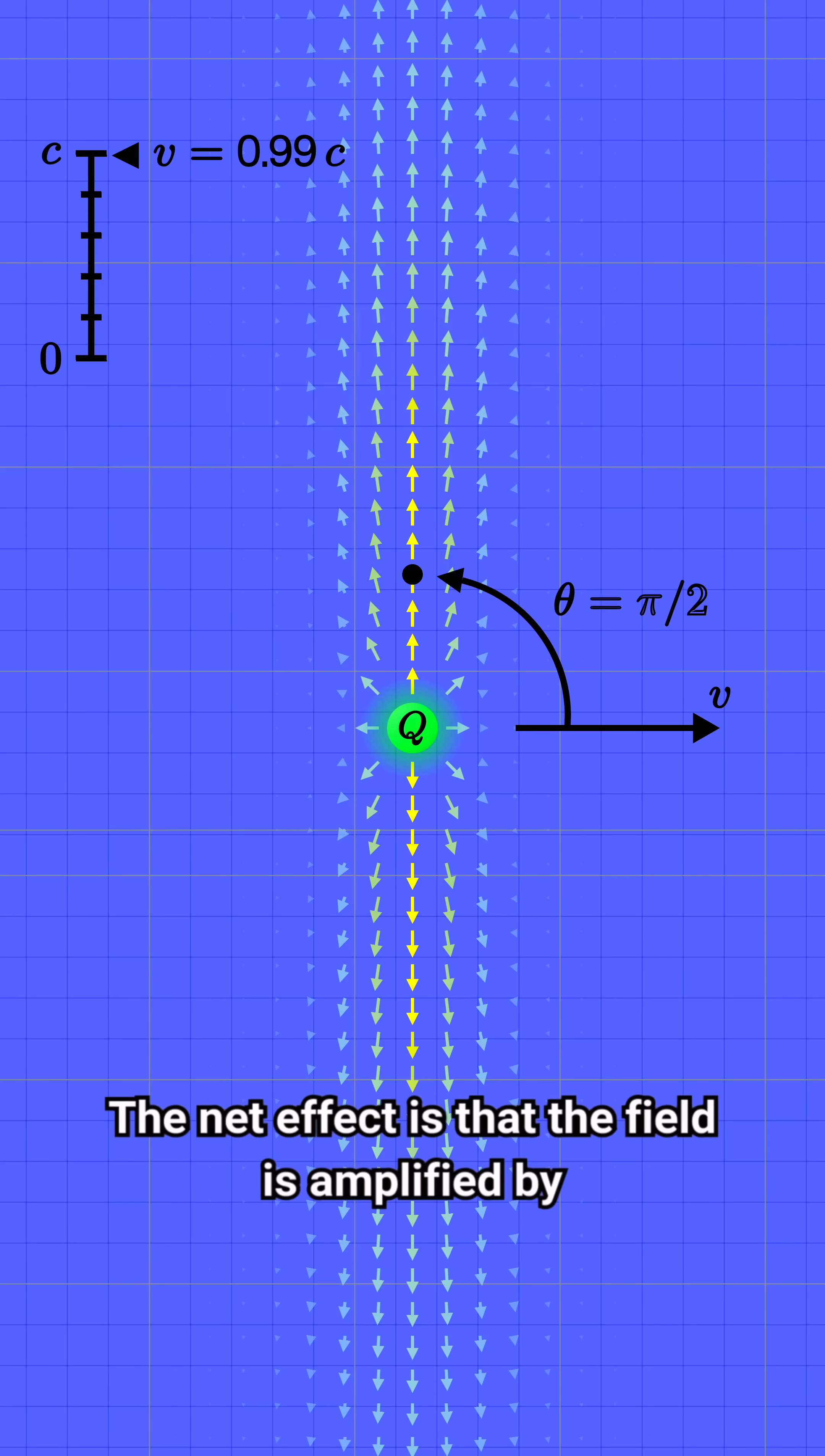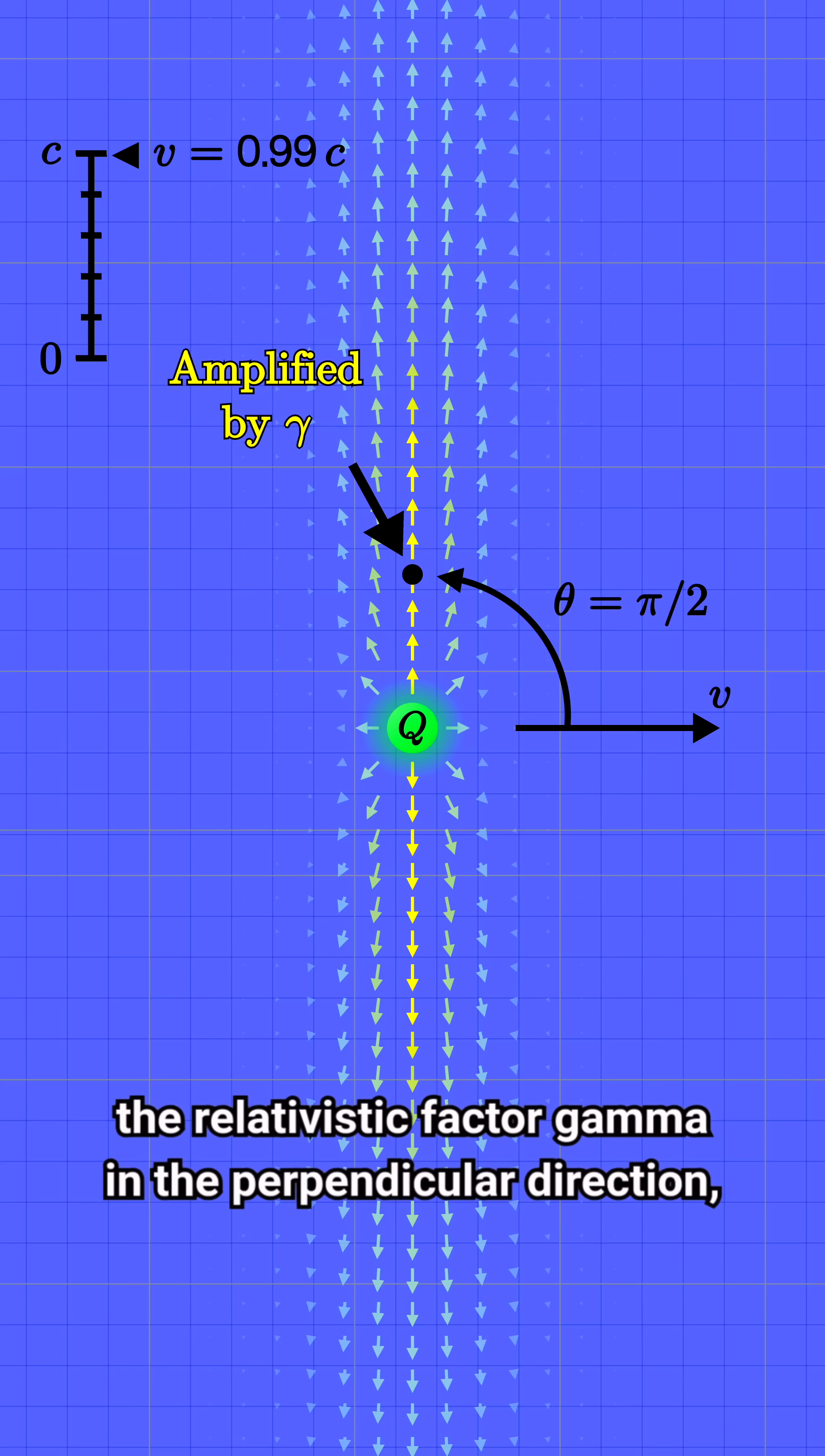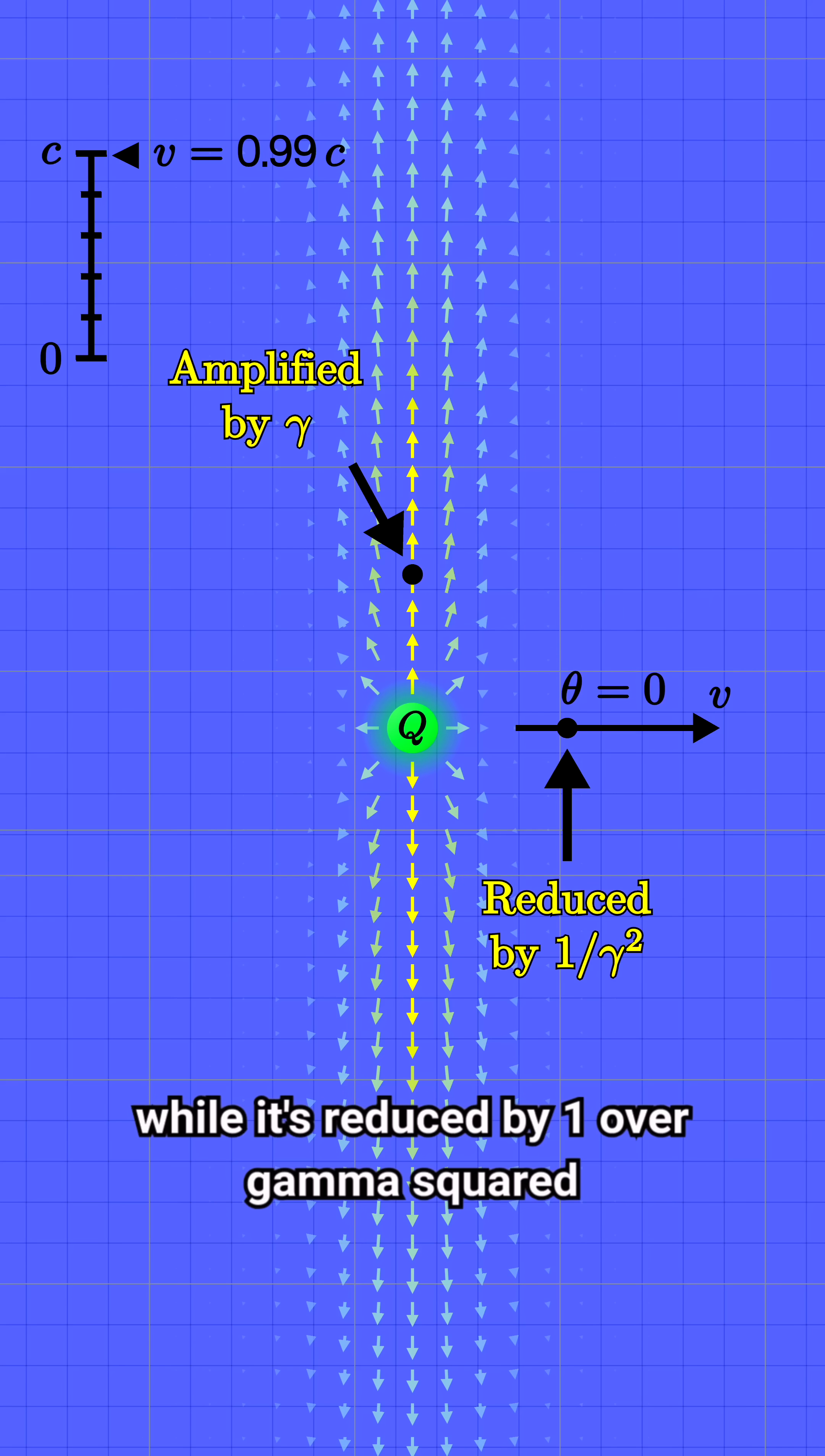The net effect is that the field is amplified by the relativistic factor gamma in the perpendicular direction, while it's reduced by 1 over gamma squared in the forward and backward directions.